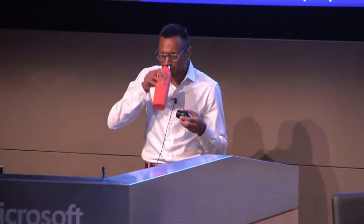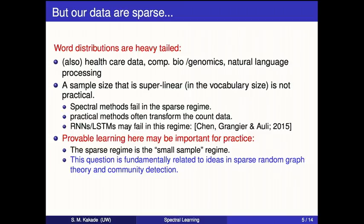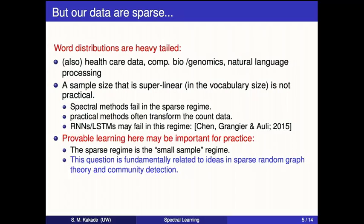The problem with this method and many others, both in practice and in theory, is that in practice the distribution over words is very heavy-tailed. This is true not just in NLP — it's true with a lot of data from the sciences. In healthcare data and genomics data, the events of interest really don't occur very many times. The data we have is basically tables of zeros.